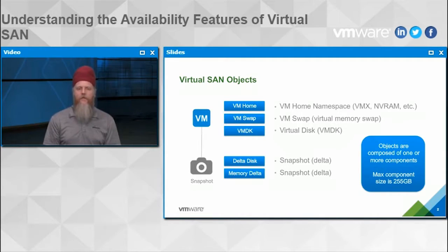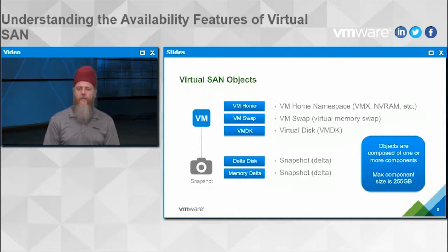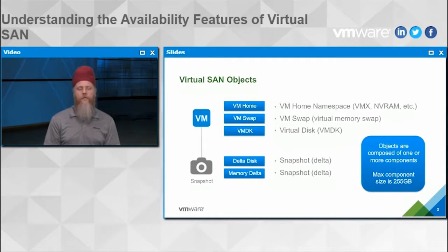Virtual SAN is made up of a number of different objects, and those objects are made up of what we call virtual SAN components. The maximum size for each of those components is 255 gigs. If you have an object — say a VMDK that's larger than that — it's just going to be split into multiple components. Those components are what we'll drill into as we talk about how vSAN handles availability.